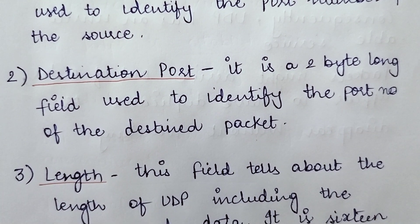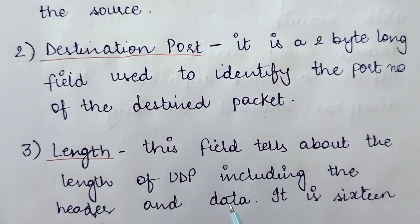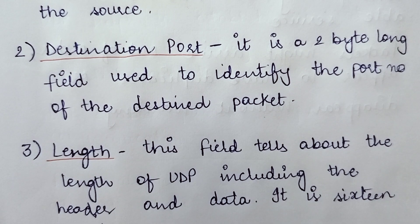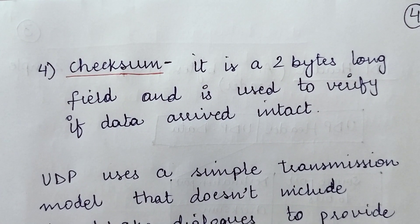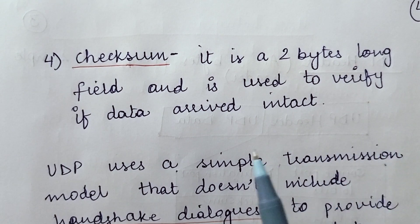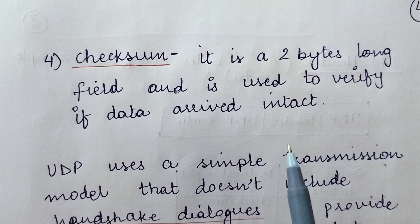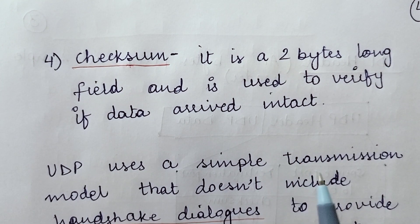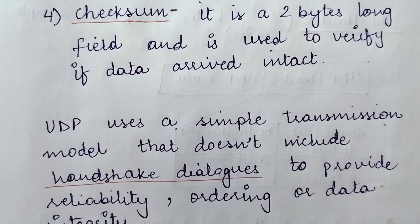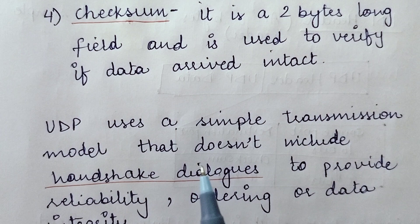The length field tells us about the total length of the UDP, including both the header and data. With the help of the length field you can identify the total length of the UDP header as well as the UDP data — it is 16 bits long. The checksum field is a two-byte long field used to verify whether the data arrived intact and without any error. In IPv4 it was not compulsory, but in IPv6 it is compulsory.